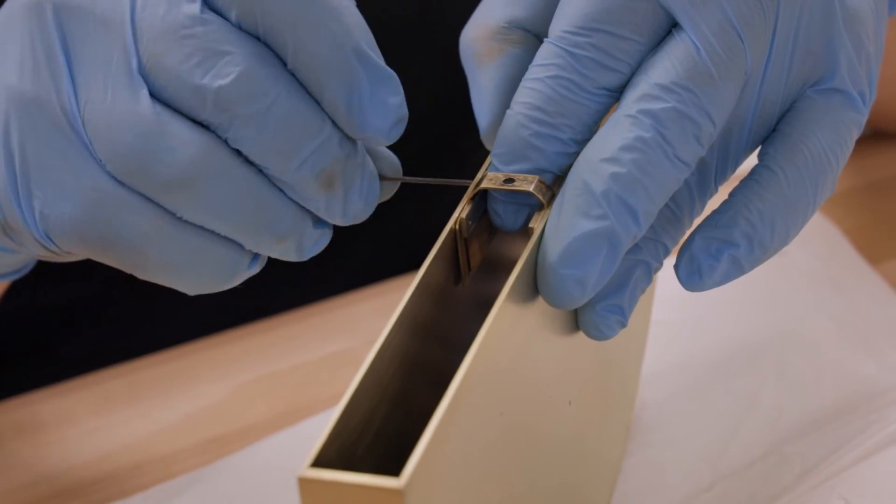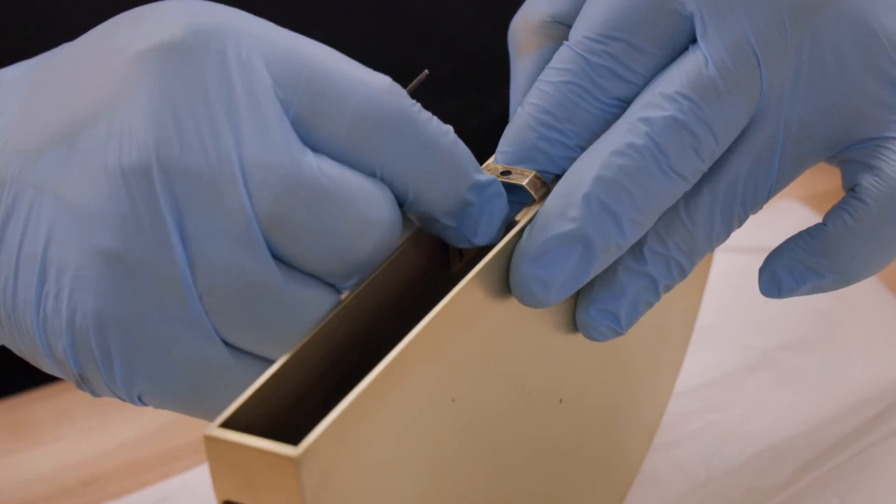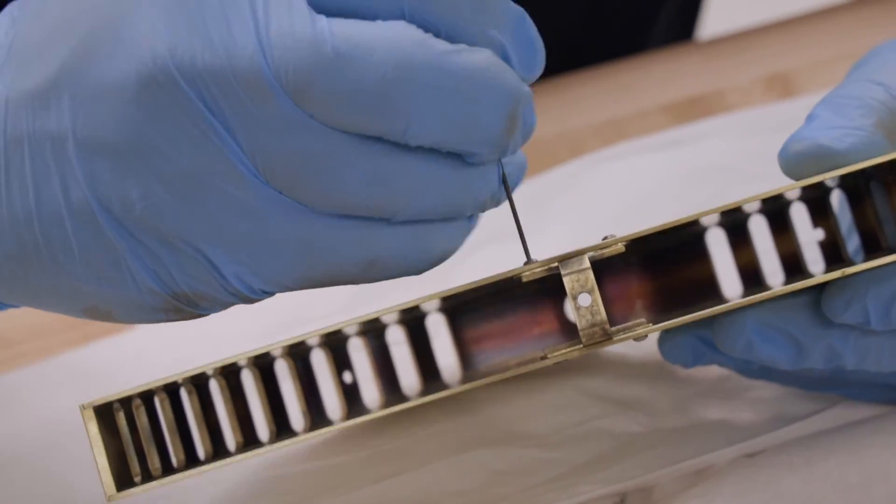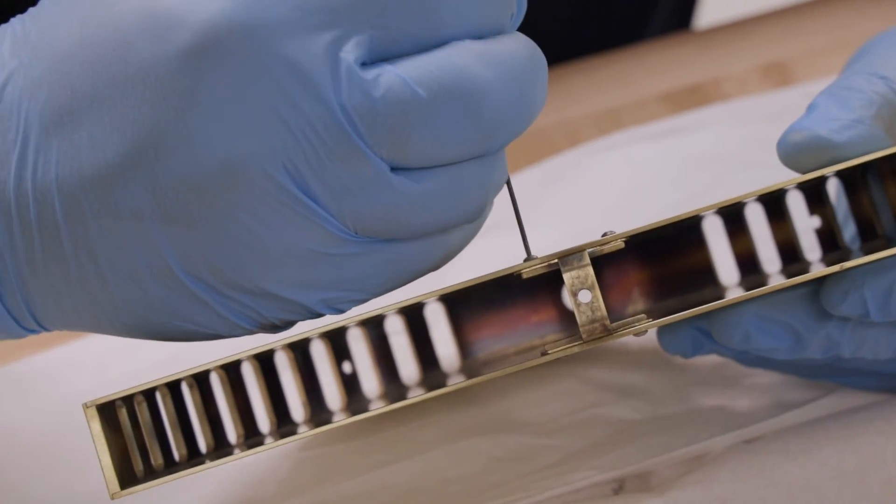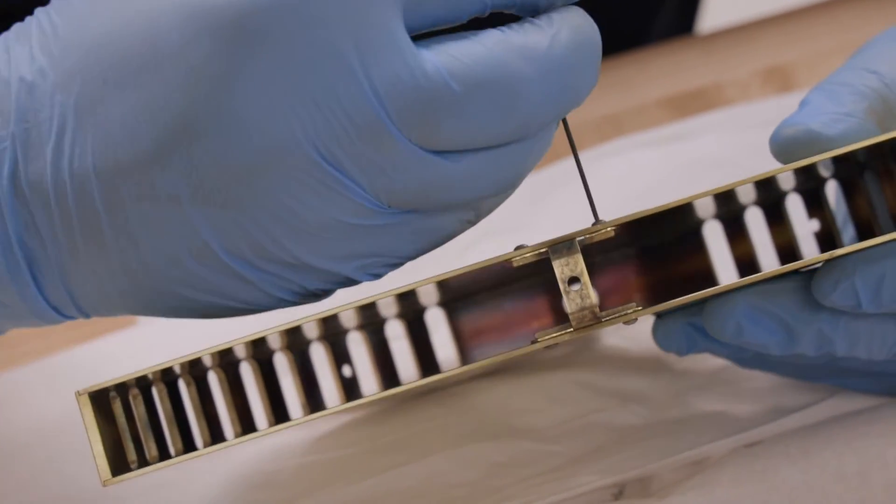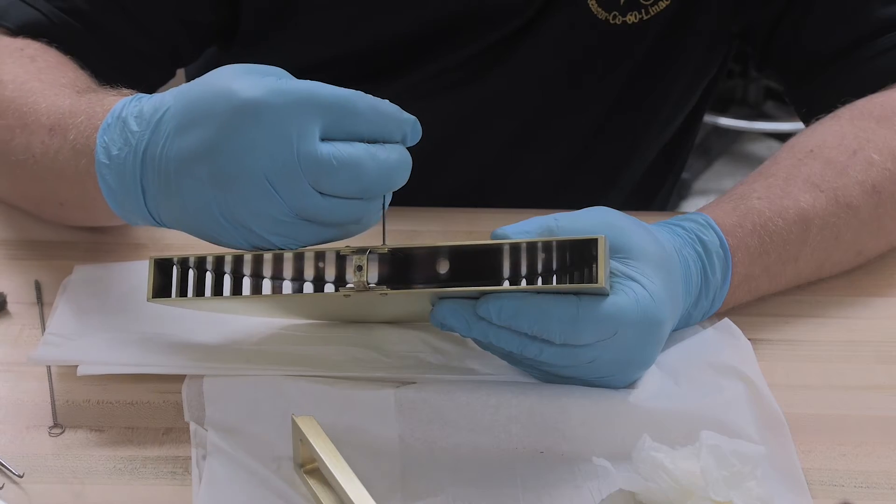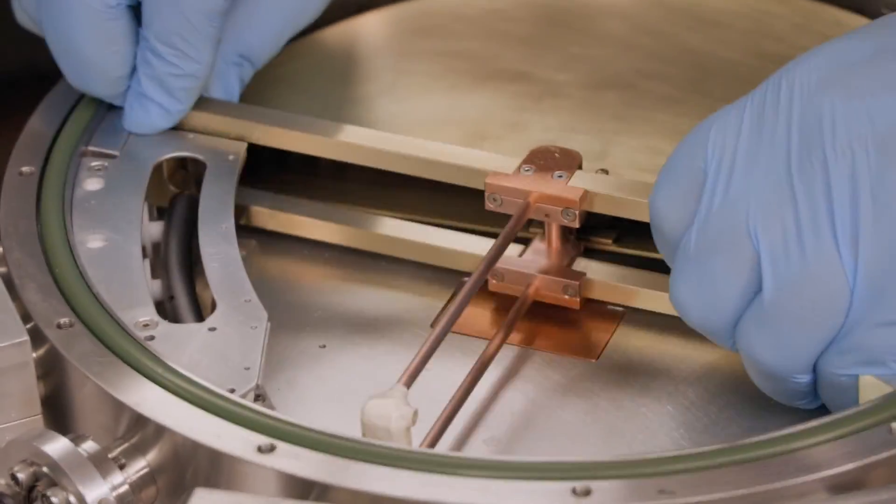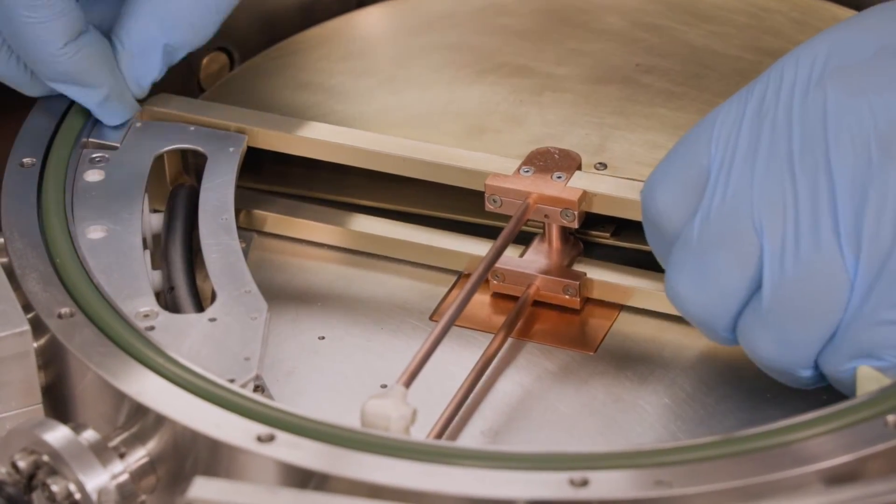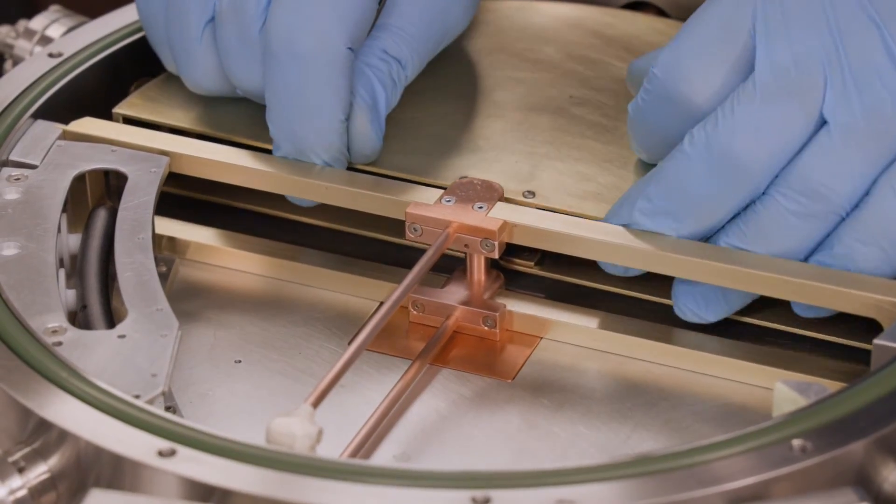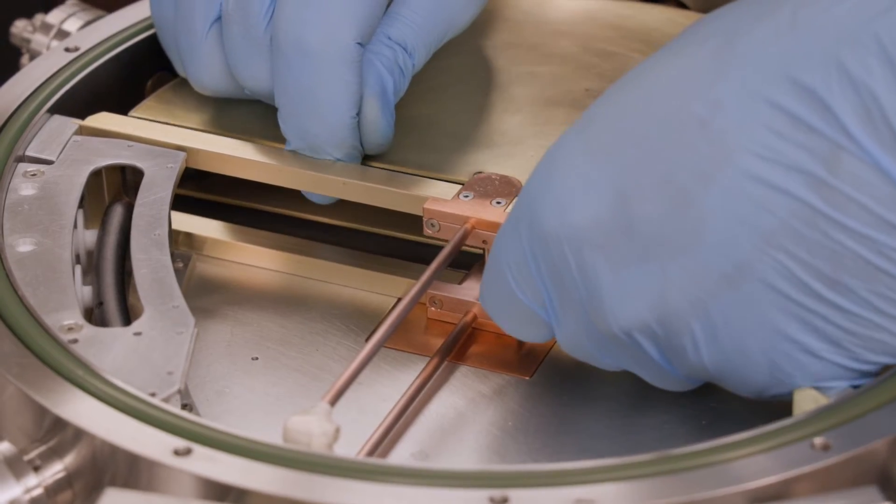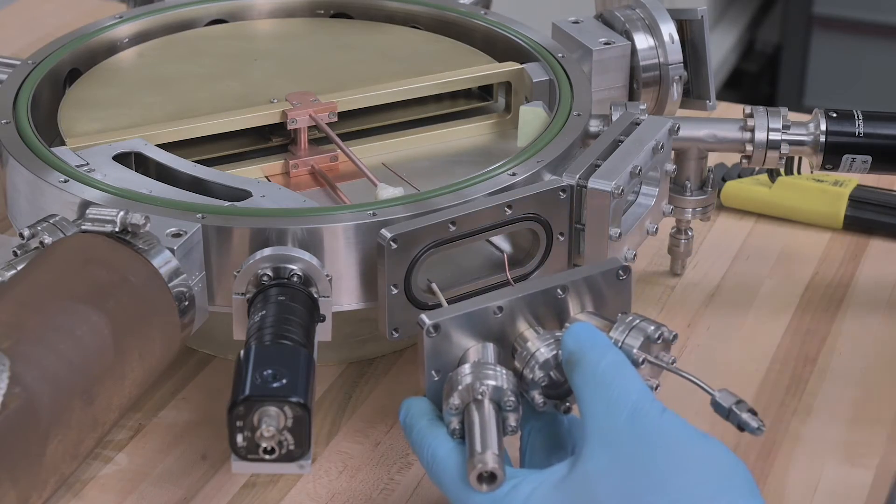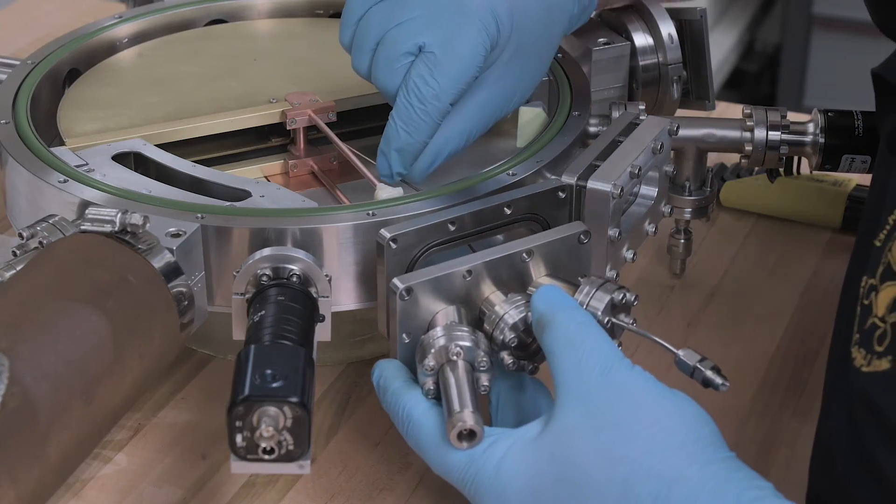After cleaning the d, we install the extraction electrodes, also known as pullers. Note that this puller has a circular aperture. The d is reinserted, followed by the dummy d ion source assembly. Then I adjust the d's position to align the puller with the ion source. We return the service flange and connect the high voltage lead and reinsert the gas delivery line.